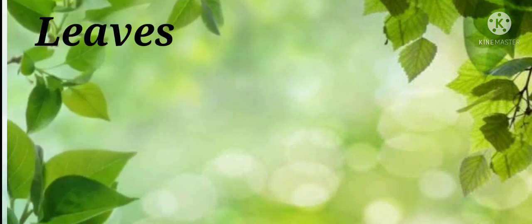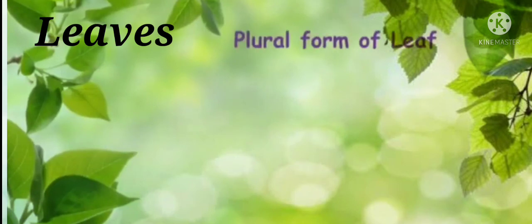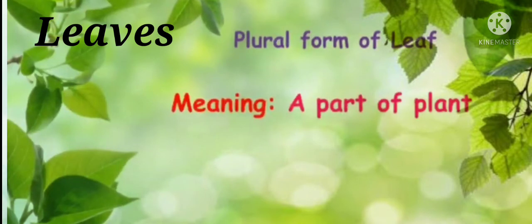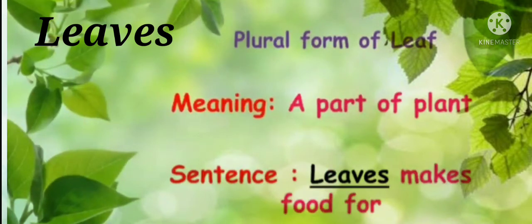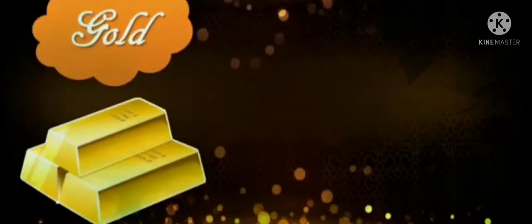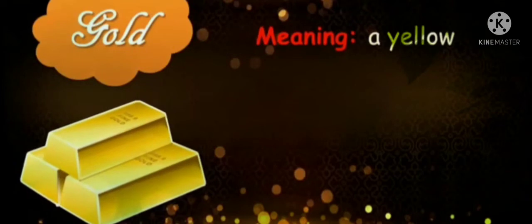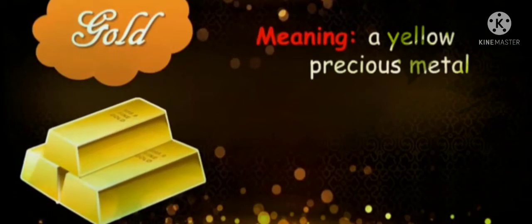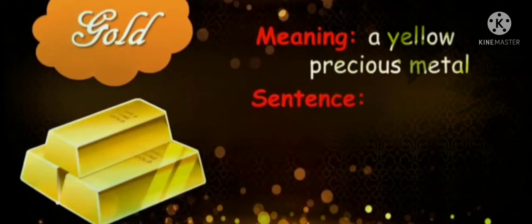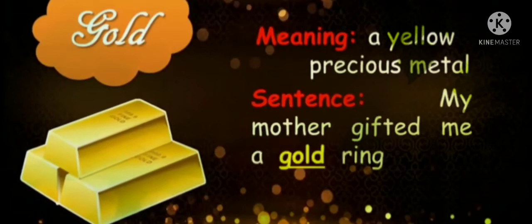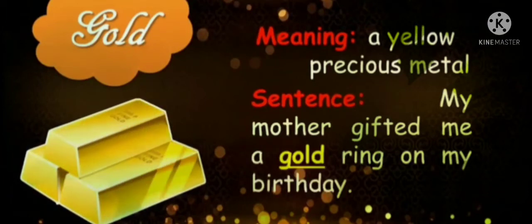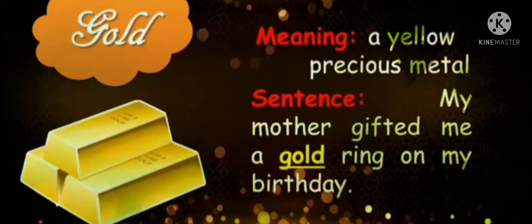Sentence: 'The fir trees have needle-like leaves.' Next word: 'leaves' — plural form of leaf, meaning a part of a plant. Sentence: 'Leaves make food for the plant.' Next word: 'gold' — meaning, a yellow precious metal. Sentence: 'My mother gifted me a gold ring on my birthday.'